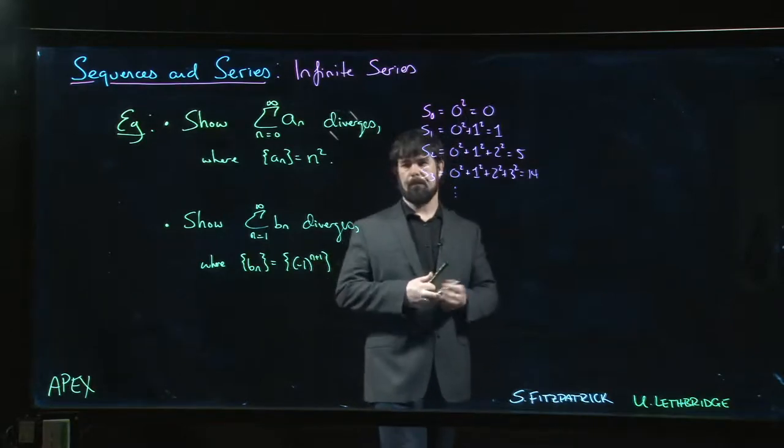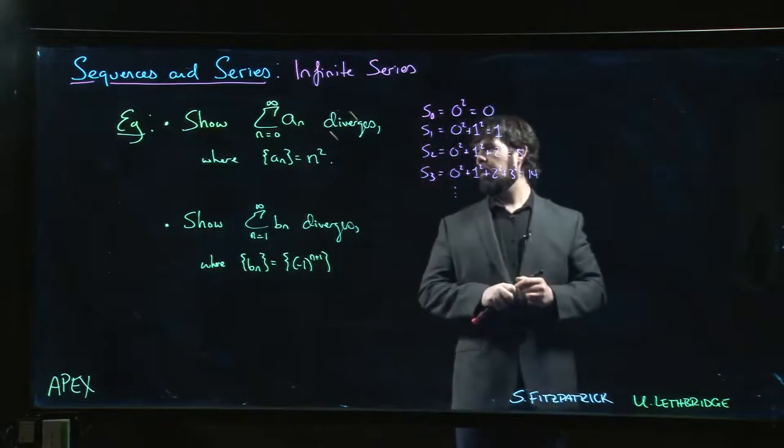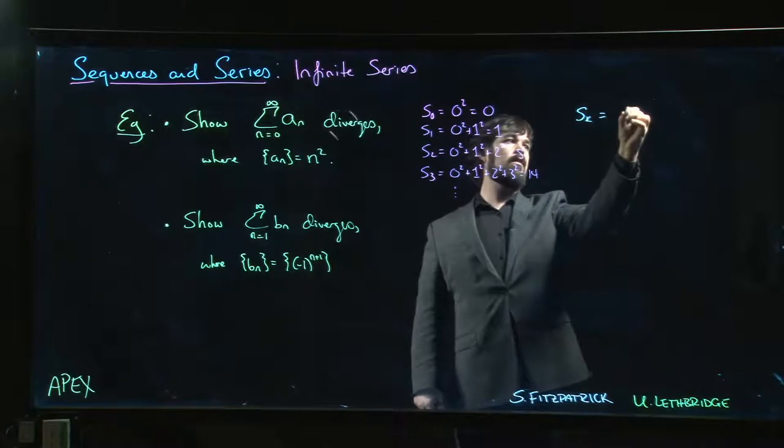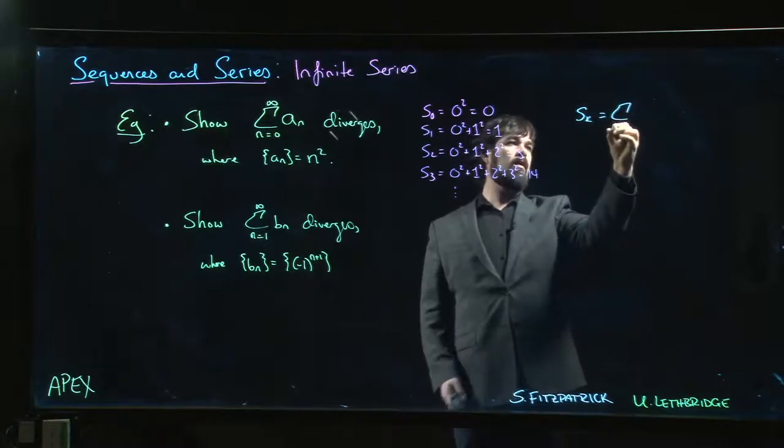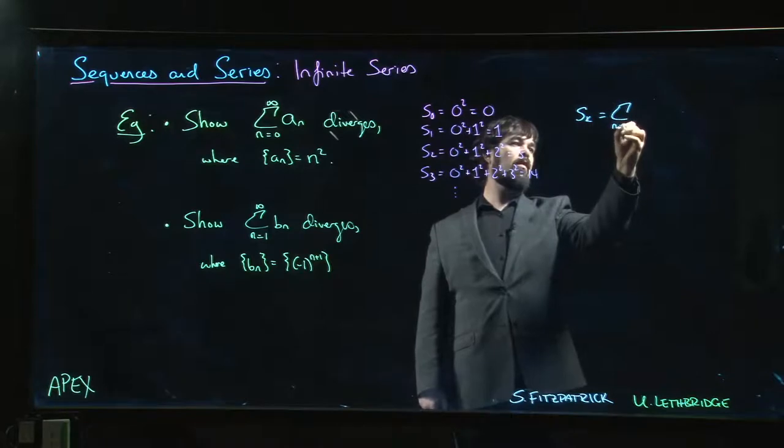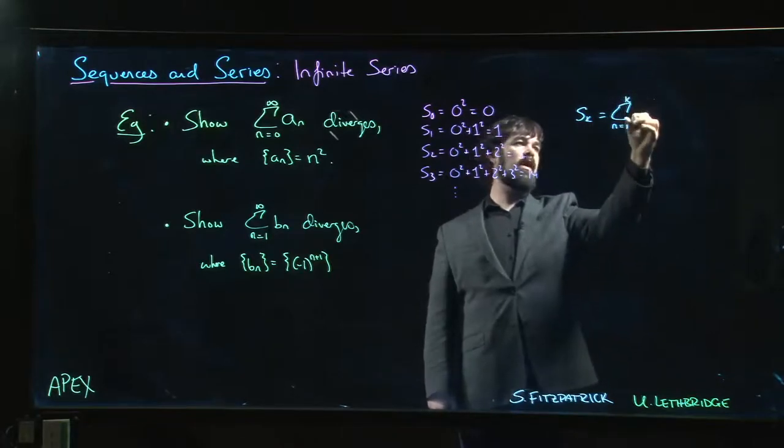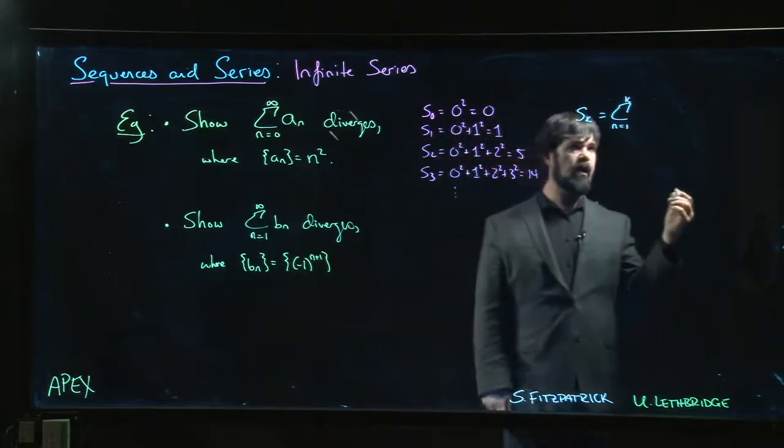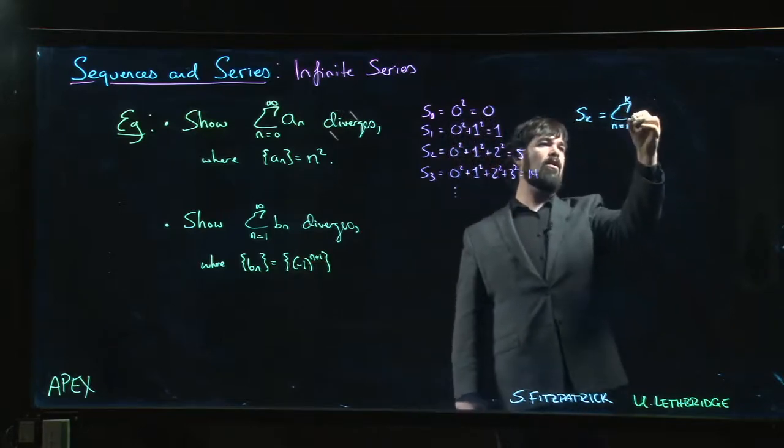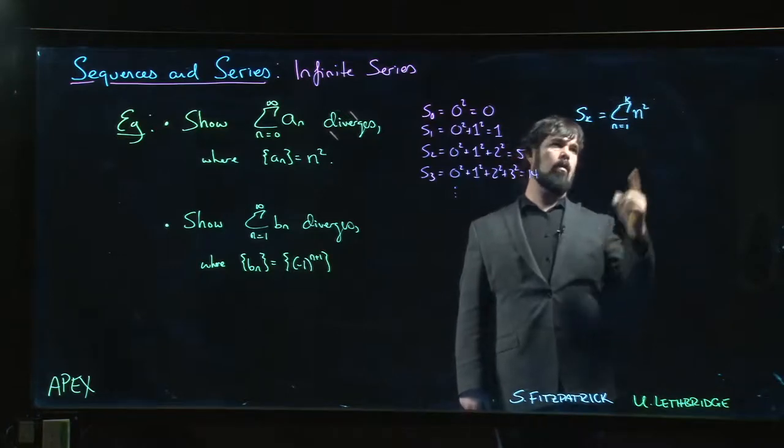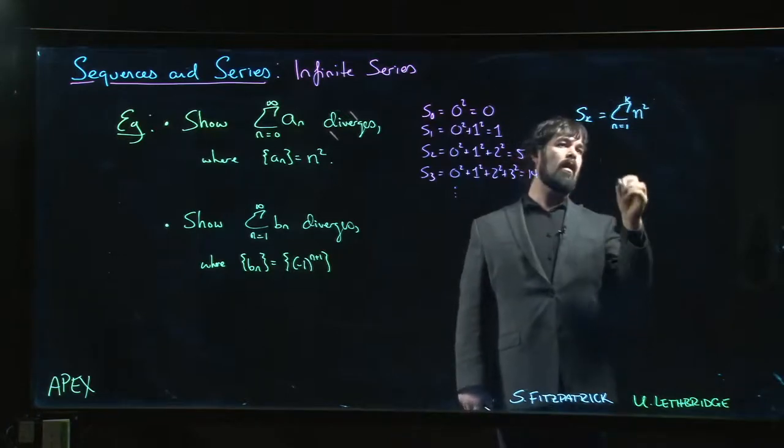In general, we know that sk is the sum from n equals one to k. We might as well start at one—starting at zero we're adding zero, so we don't gain anything from that. So sk equals the sum from n equals one to k of n squared.